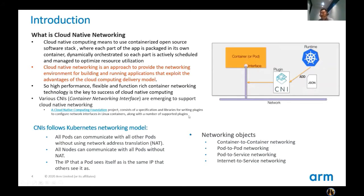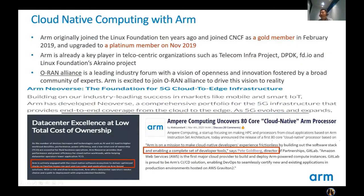For various CNIs emerged today to support cloud-native networking: CNI is a Cloud Native Computing Foundation project. It consists of the specification and libraries for writing plugins to configure network interfaces in Linux containers, along with a number of supported plugins. The CNIs follow the Kubernetes networking model for cloud-native computing with ARM.